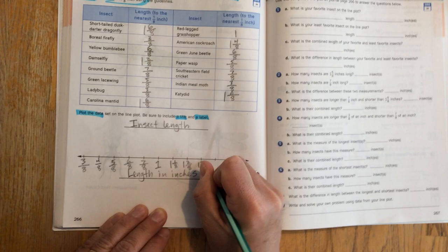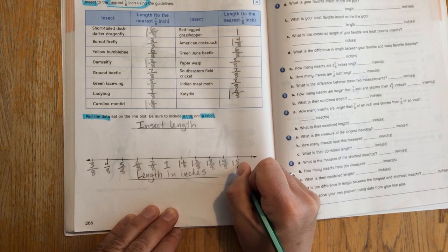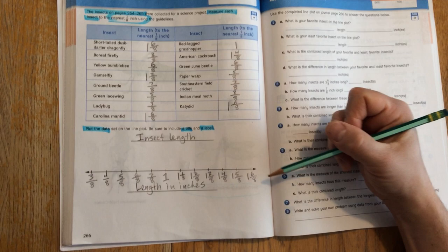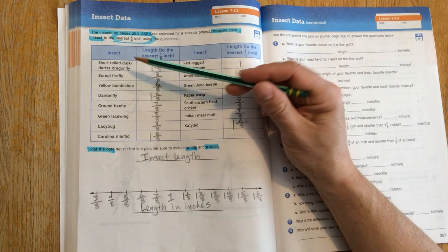Okay, so after one inch, I'm going to put 1 and 1 eighths, 1 and 2 eighths, 1 and 3 eighths, 1 and 4 eighths, 1 and 5 eighths, and 1 and 6 eighths. And 1 and 6 eighths is the longest length of the insects listed here, just like our short-tailed dusk darter dragonfly.